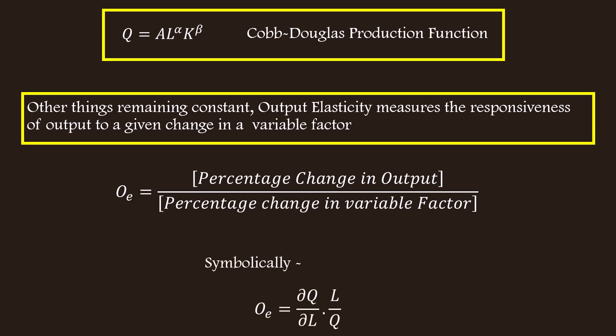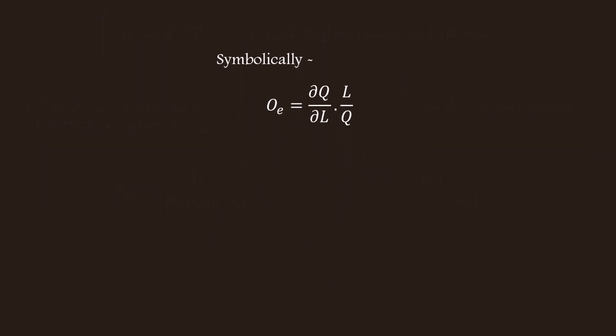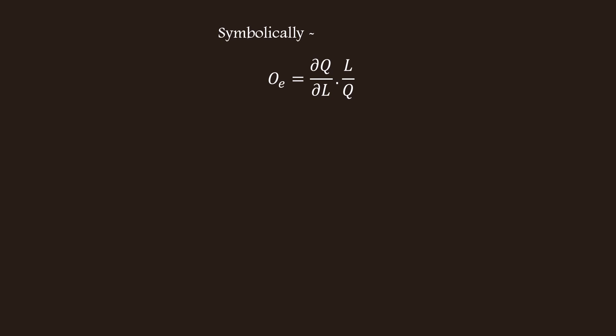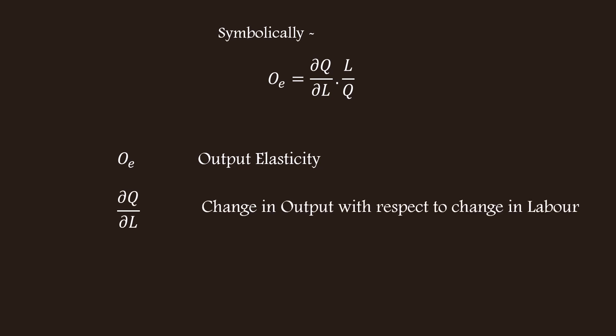Symbolically, it can be stated as QE equal to (dQ/dL) multiplied by (L/Q). This formula is going to be used when we calculate output elasticity with respect to change in labor. QE stands for output elasticity; dQ/dL is the change in output with respect to labor — in other words, the partial derivative of the given function with respect to labor.